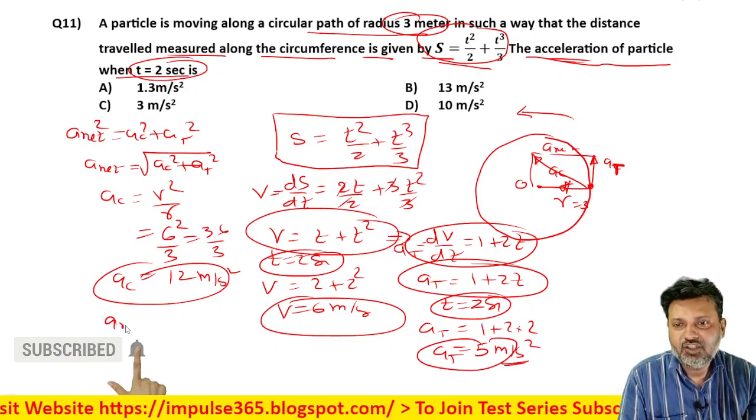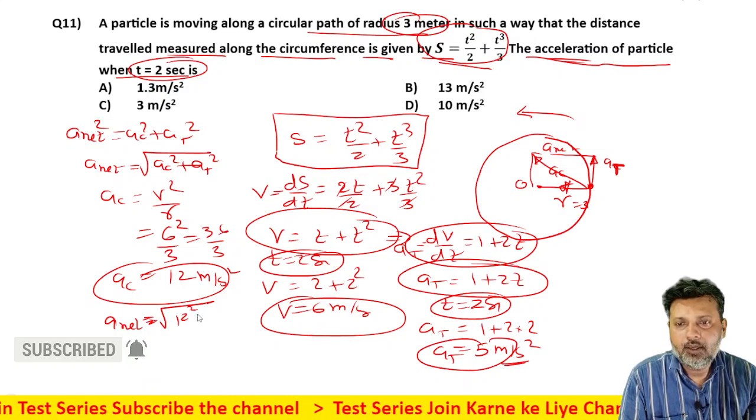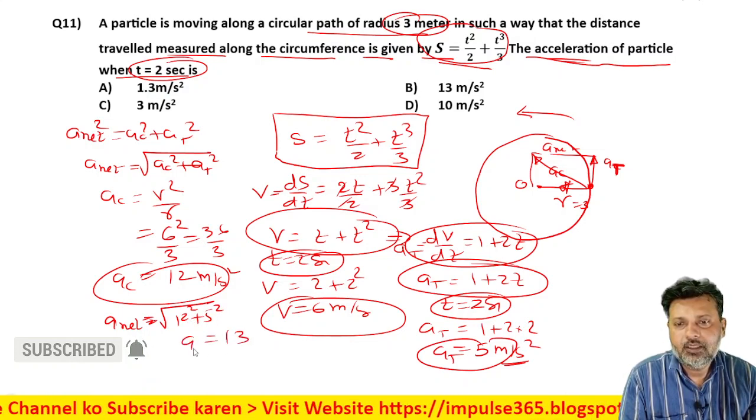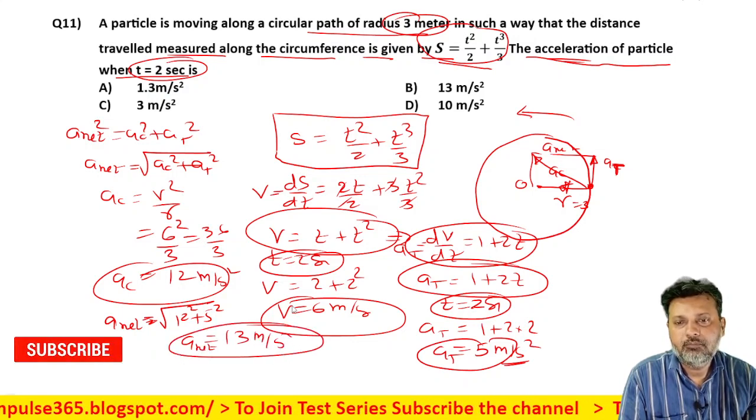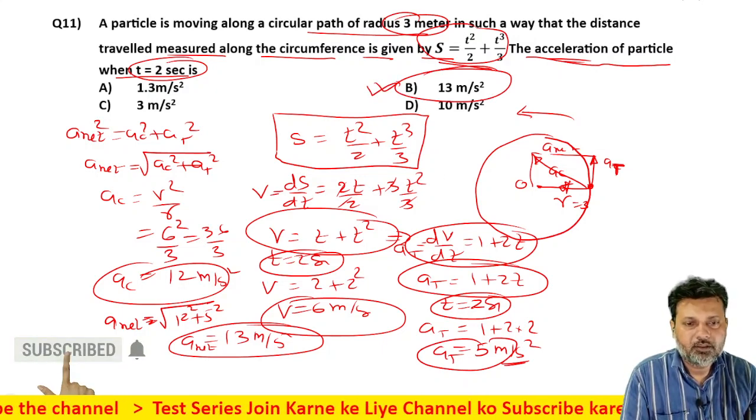So if I talk about net acceleration, how much will it be? Under root 12 squared plus 5 squared. How much will it be? 13. Net acceleration meter per second square, 13 meter per second square. Check the options. Okay, let's do the next question.